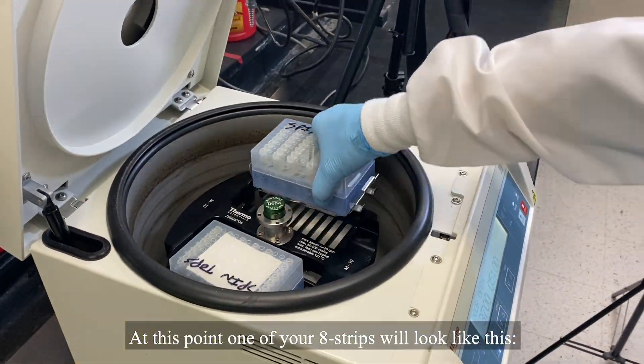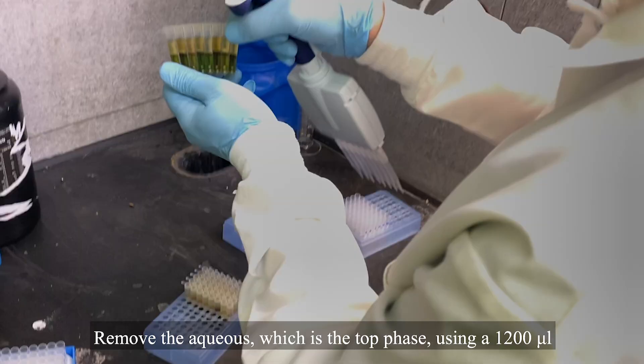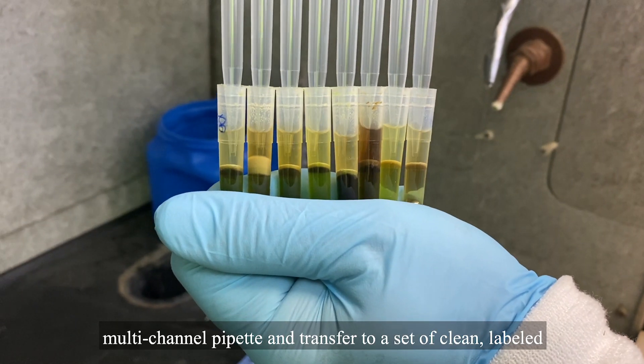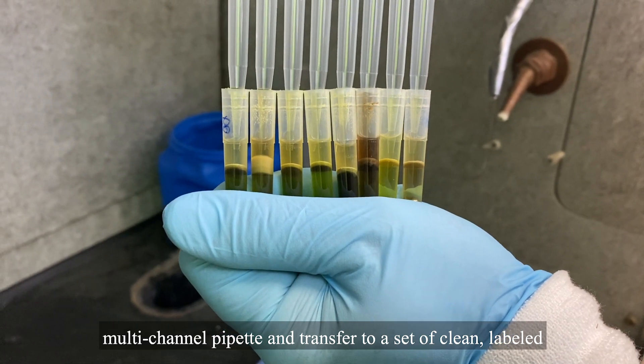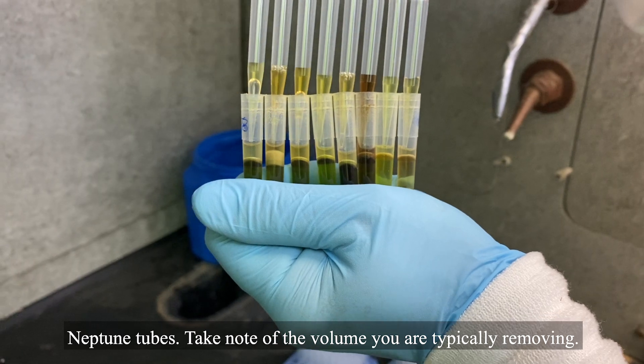At this point, one of your eight strip tubes will look like this. Remove the aqueous, which is the top phase, using a 1200 microliter multi-channel pipette, and transfer it to a set of clean, labeled Neptune tubes. Take note of the volume you're typically removing.